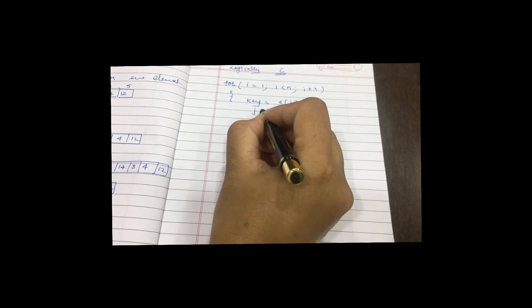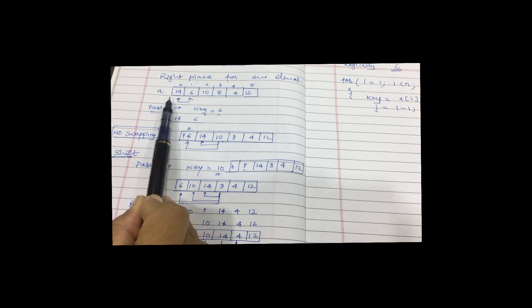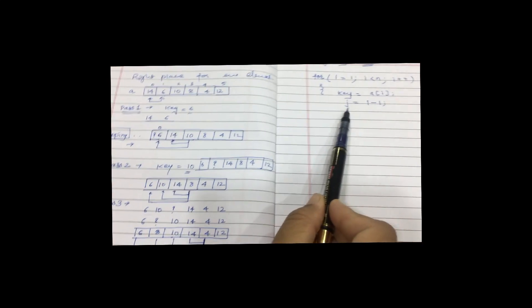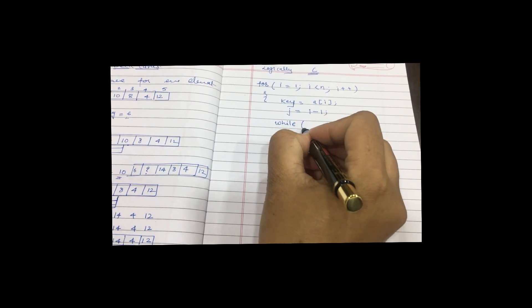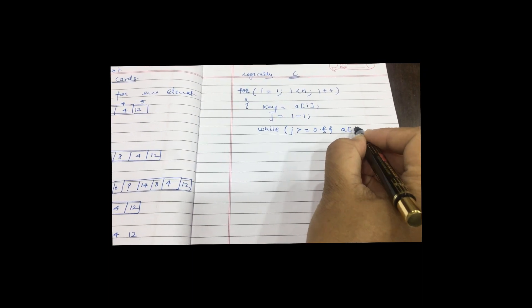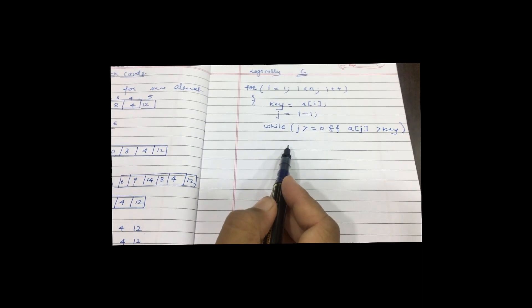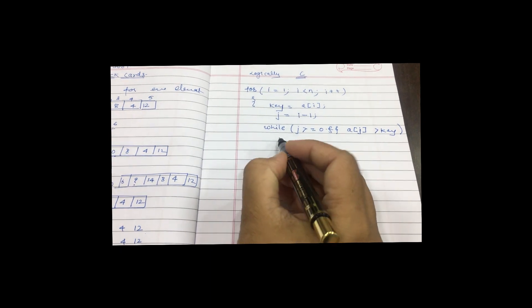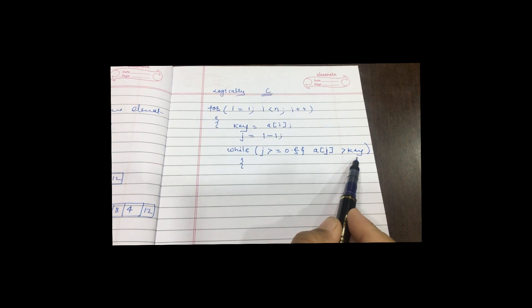Then we set J equal to i minus 1, so we can start comparing with lower index numbers. We then write a while loop: while J is greater than or equal to 0, and A of J is greater than the key element. The condition J greater than or equal to 0 ensures we do not compare below index 0. A of J must be greater than the key value for shifting to be performed.